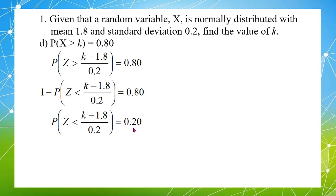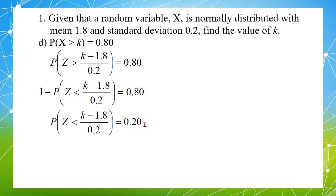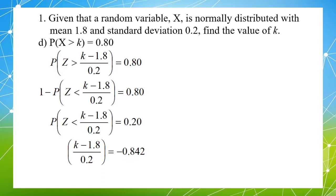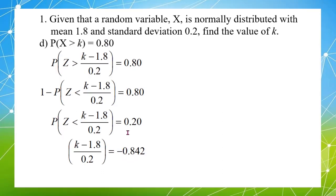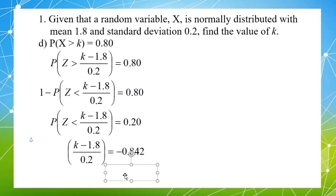When I check the table using 0.2, I can't find it — same as question 2. So I use 1 minus 0.2 equals 0.8 to check the table, and find Z equal to 0.842. I must put a negative sign because the probability 0.2 is less than 0.5, making Z negative. Therefore K equals 1.6316.